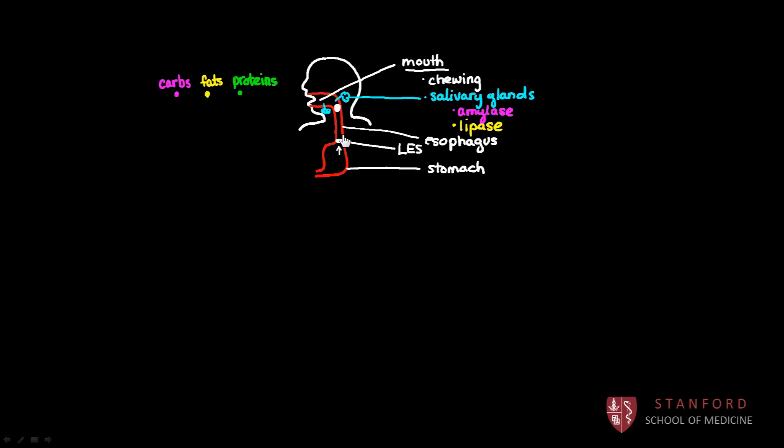So once food enters the stomach, it gets mixed with a bunch of other things that are secreted by the stomach. Things like hydrochloric acid or stomach acid. And I'll just write HCl because that's the chemical abbreviation for hydrochloric acid. The stomach also secretes a digestive chemical called pepsin. And pepsin, I'll draw it in green because pepsin, you guessed it, it digests proteins.